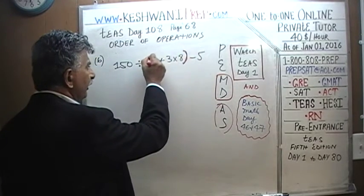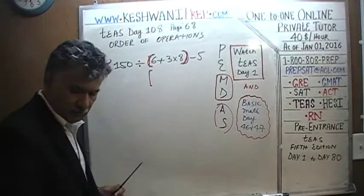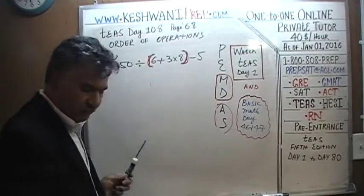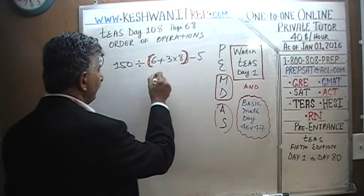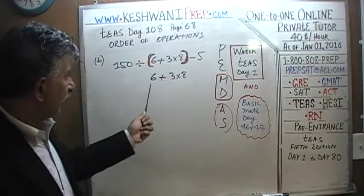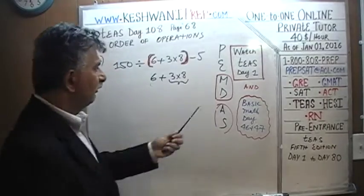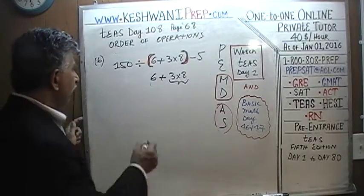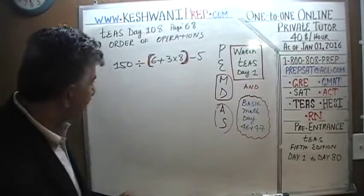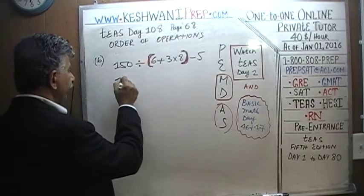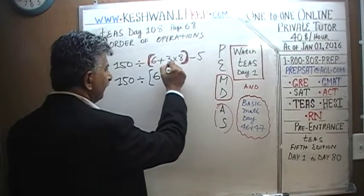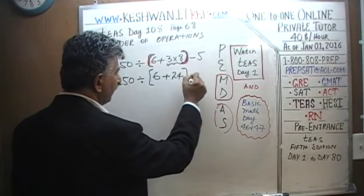You have to treat the parenthesis as a separate quantity by itself. Inside the parenthesis we have 6 plus 3 times 8. Within that quantity, we are supposed to do multiplication first. So 3 times 8 is 24. That gives us 150 divided by, open parenthesis, 6 plus 24 — which is 30 — close parenthesis, minus 5.